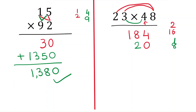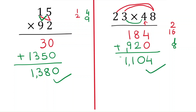Add one plus eight — that is nine. Add both partial products: four, ten, one — 1104 is the answer.